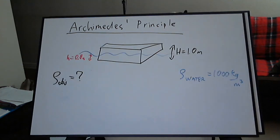Here is a simple application of Archimedes' Principle. We have a block of an unknown object of height 1 meter immersed in pure water of density 1000 kg per cubic meter. It is floating steadily with 0.8 meters of its height submerged.